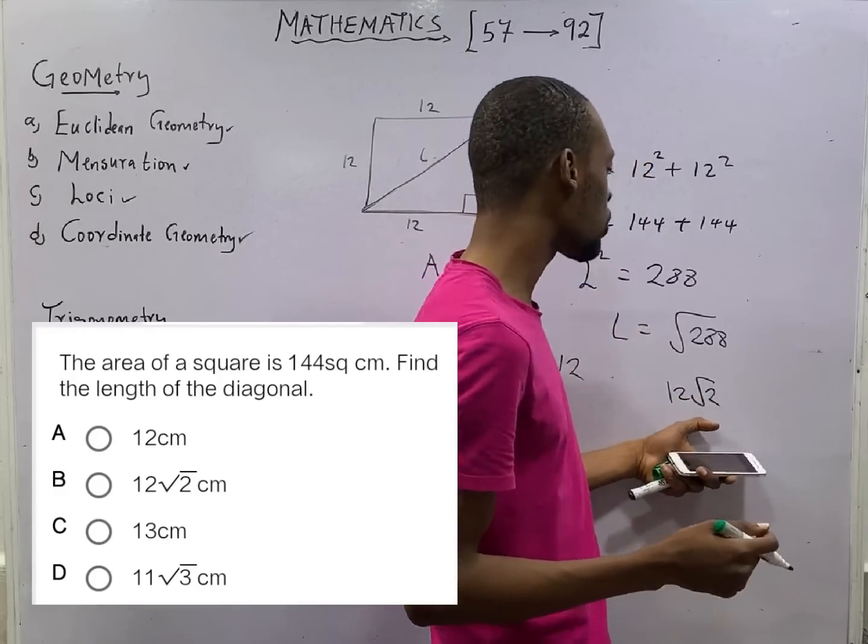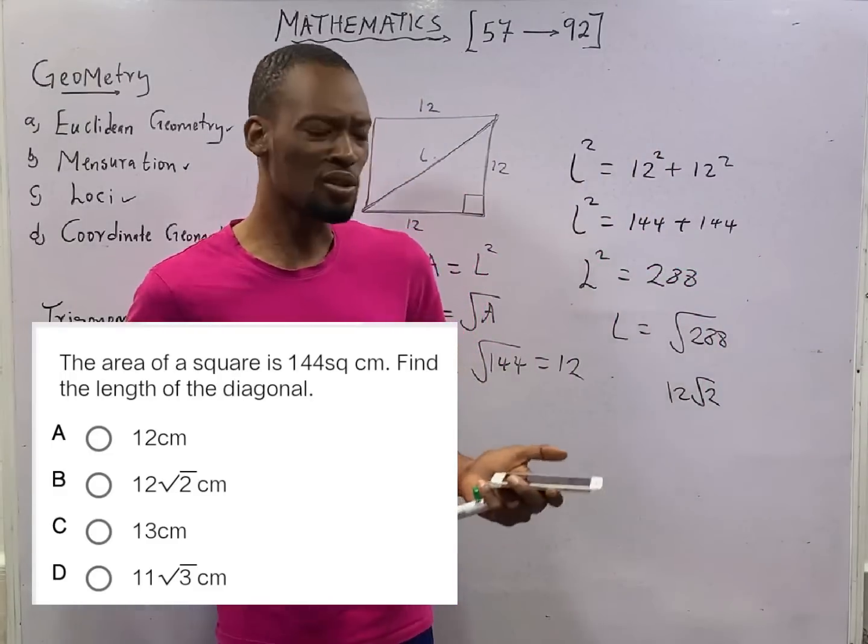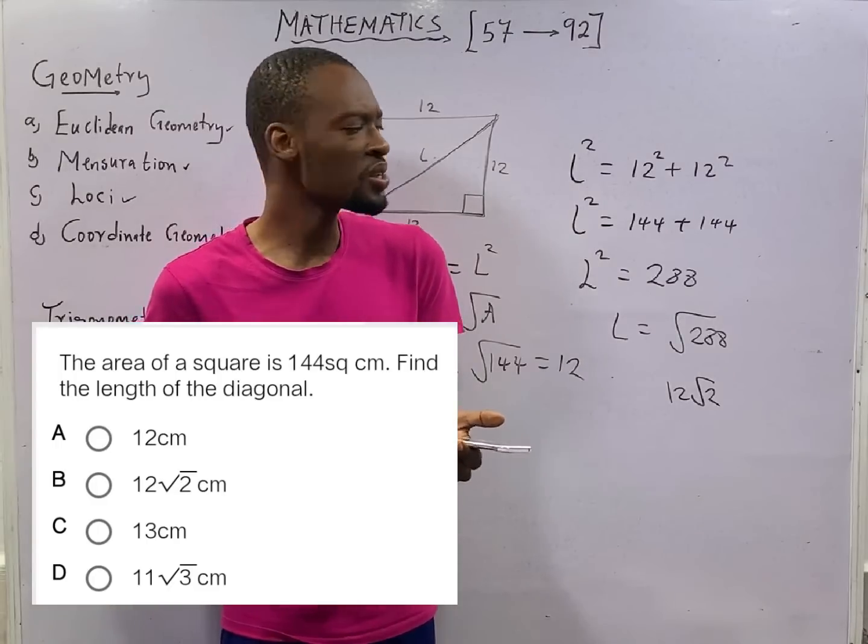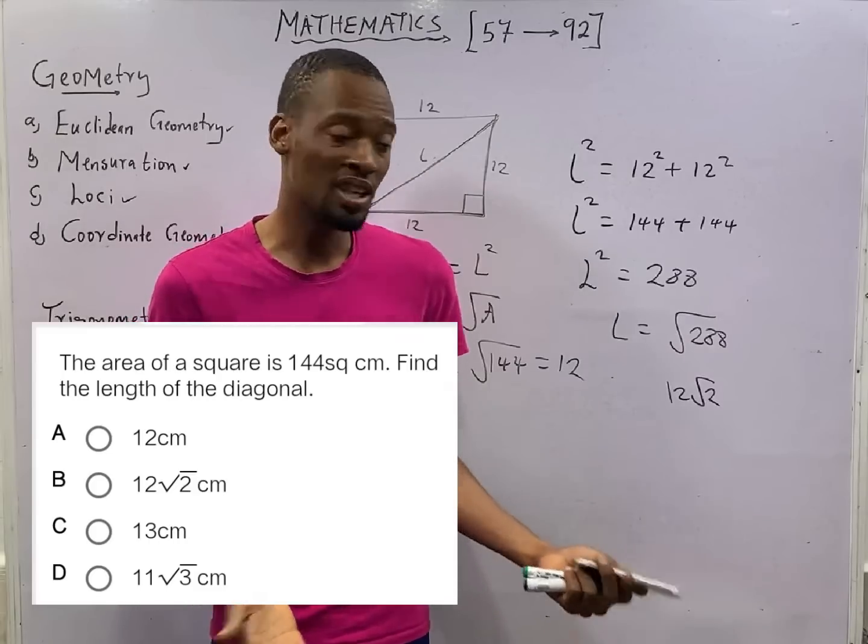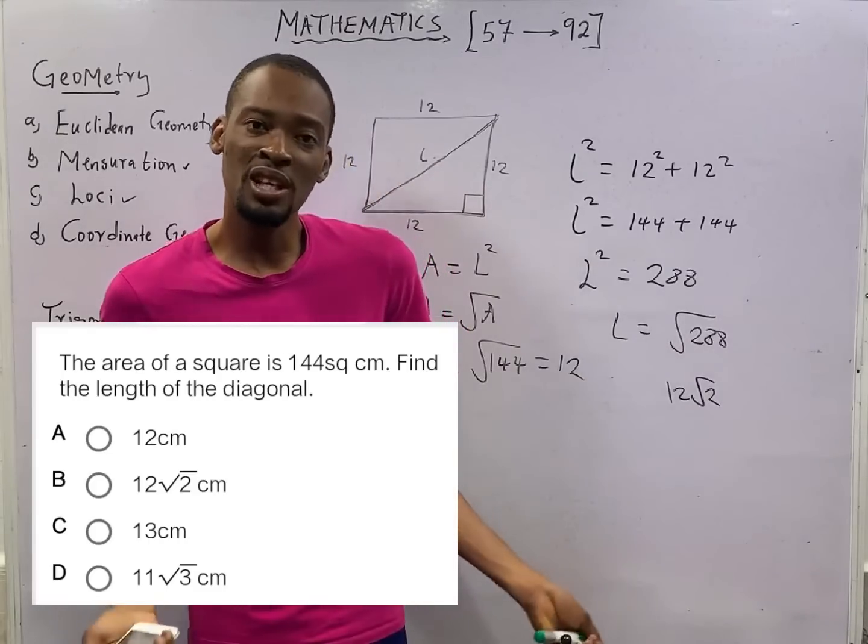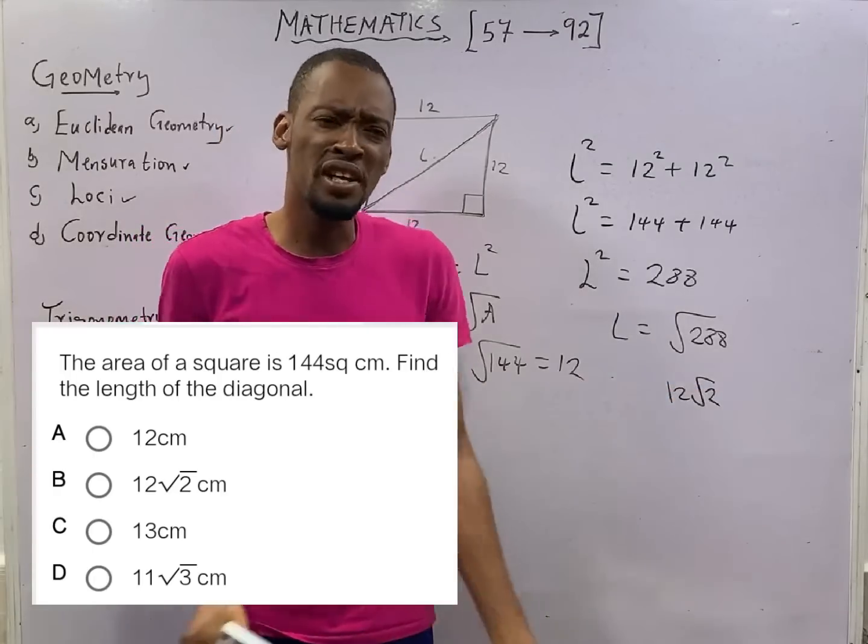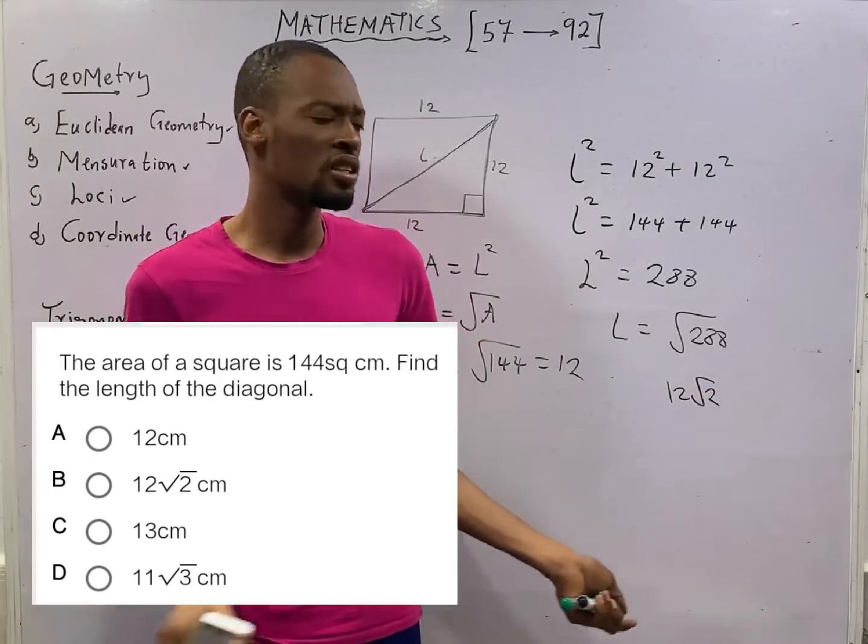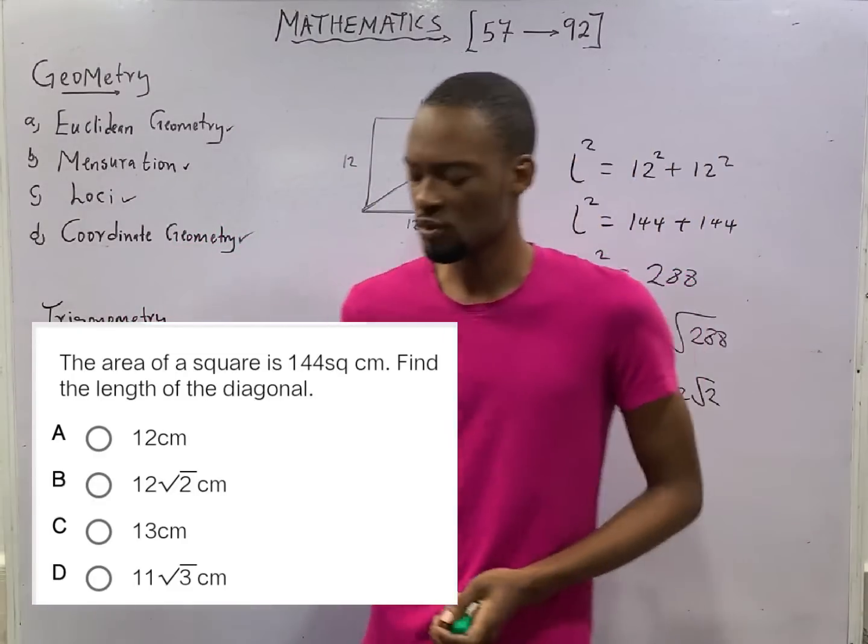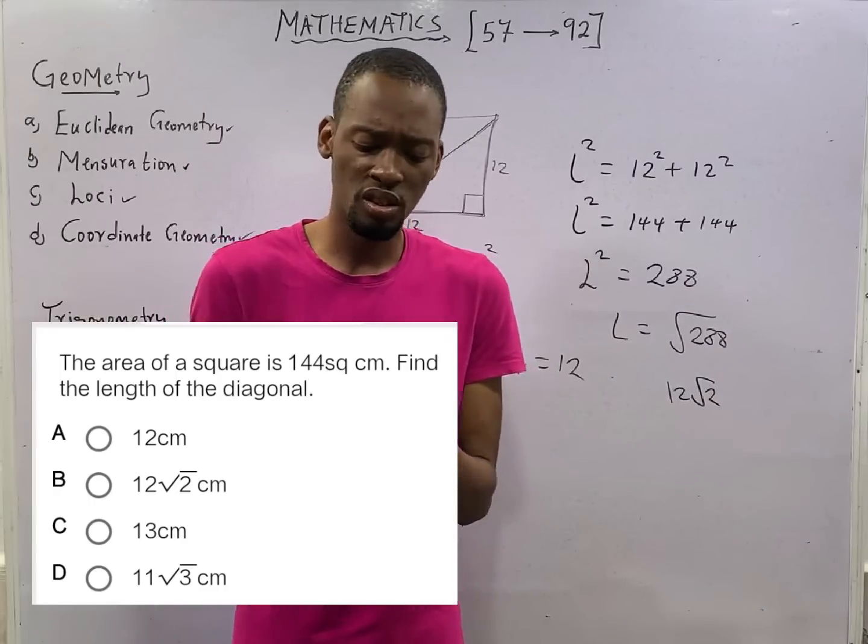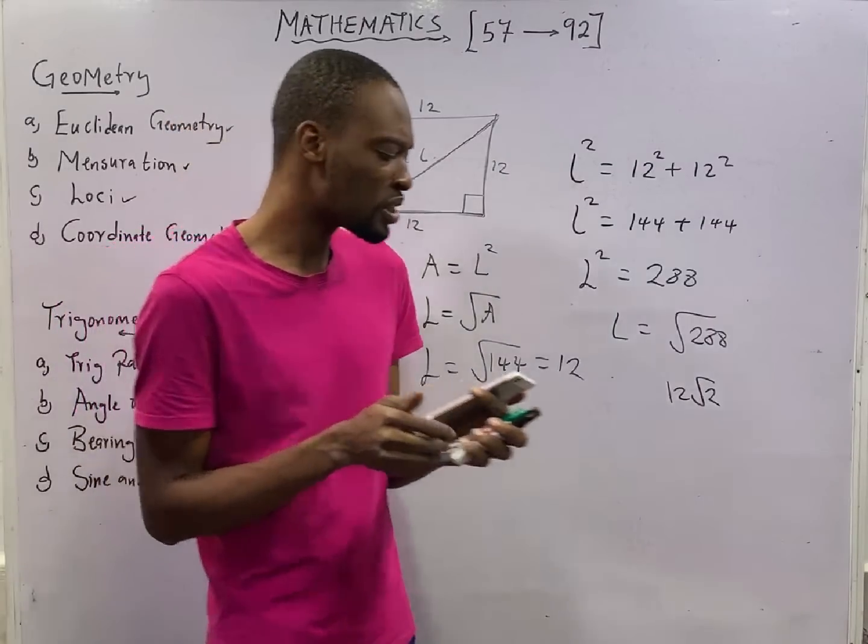If you don't understand how I got 12 root 2, it means you still have problems with surds. Please go back to that class. Don't skip any episode. If anyone you don't understand, ask questions in the comment box. Contact me. Don't skip anything. Don't be shy to ask questions or to talk. You shy, you fail. You write JAMB, you shy again, you fail. Nothing to be shy about. Being a jambite is not a thing of shame. You are not the first. You are not the second. You are not the third and you are not the last.